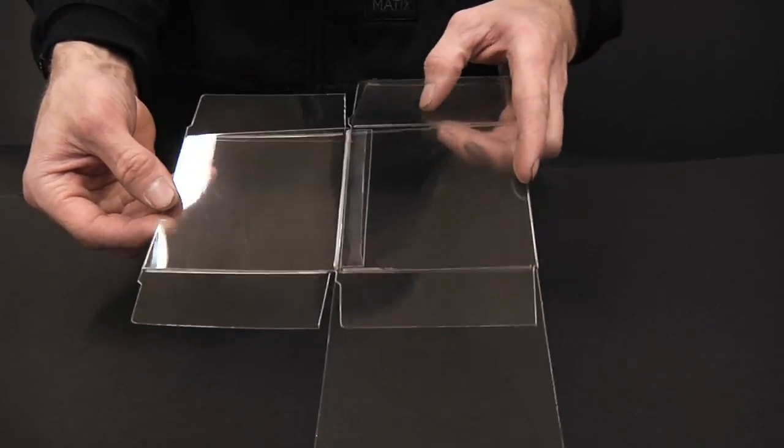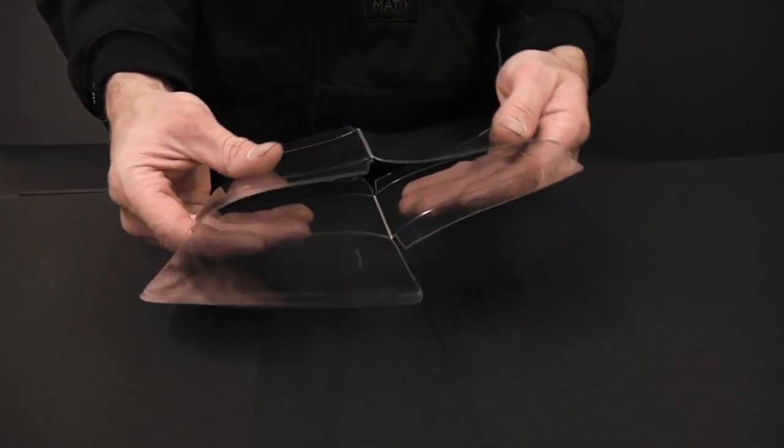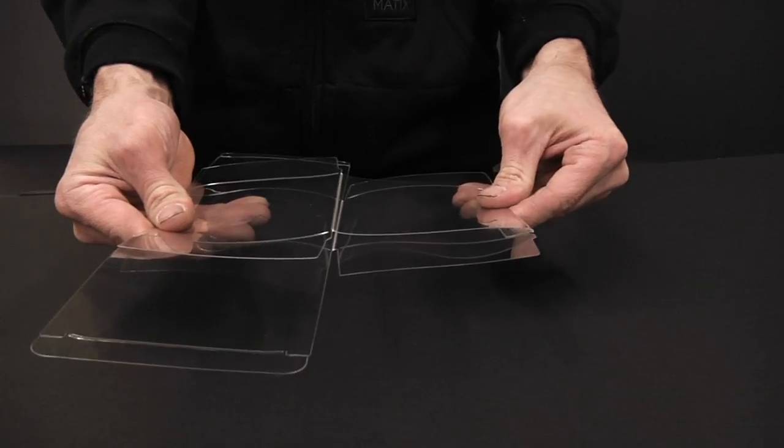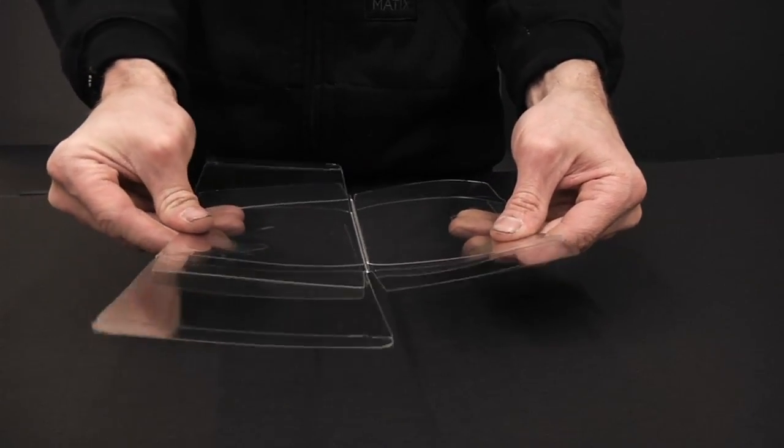Open and fold the box all the way over, slightly creasing the other two sides. Reopen the box, squaring it off.